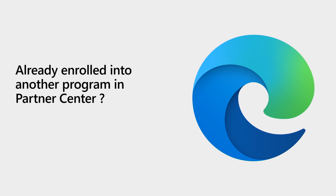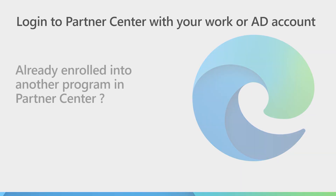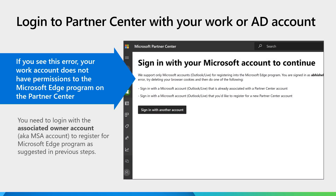One more thing — if your organization is already enrolled into an existing program on the Partner Center, what should you be doing? If you follow the Partner Center link to Microsoft Edge add-ons, you may see an error if you're logged in with your AD account. In that case, it means your organization is not yet registered for the Microsoft Edge add-ons program. To register, you need to log in with the Microsoft owner account associated with your work account, register for the Edge add-ons program, and follow the steps covered previously.